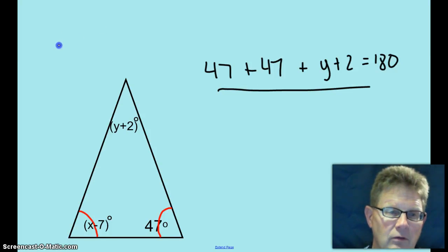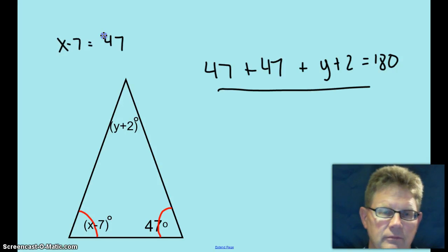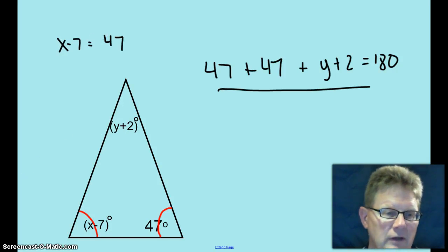And then for the x angle, x minus 7 equals 47. Let's move on to the next theorem.